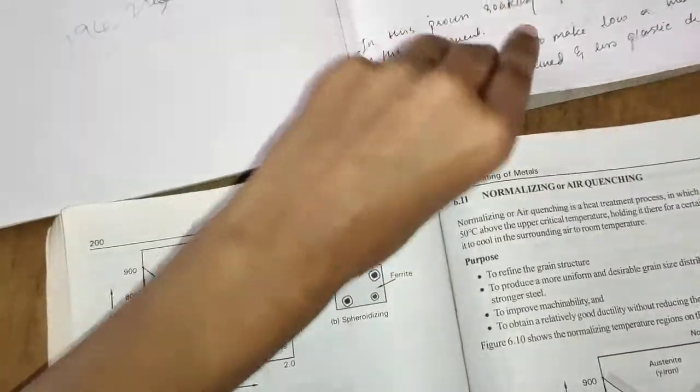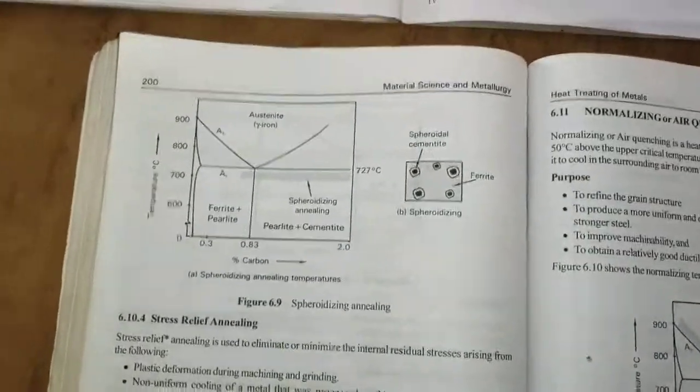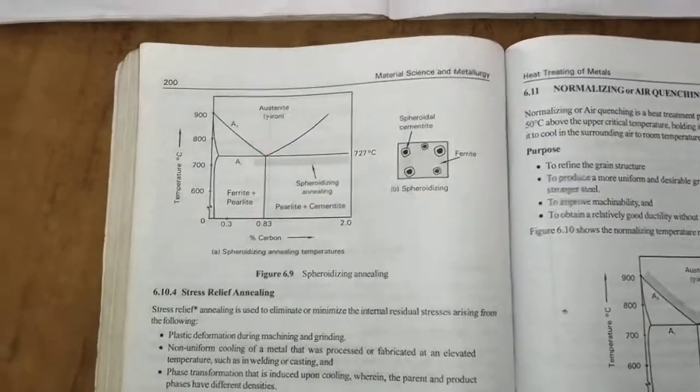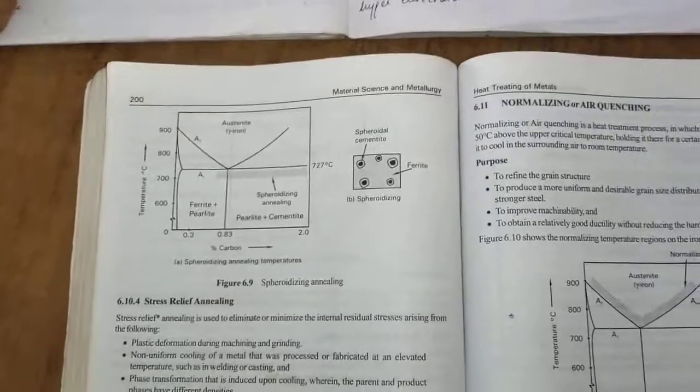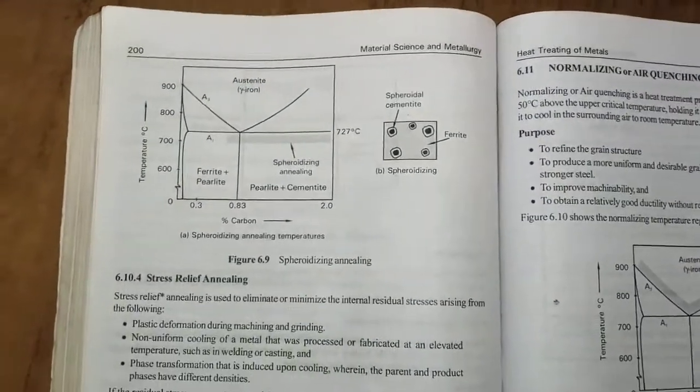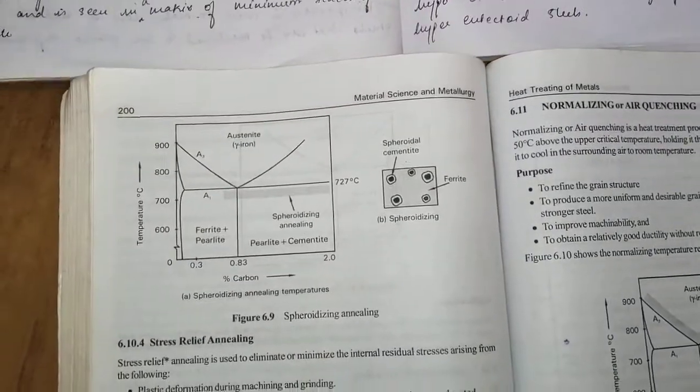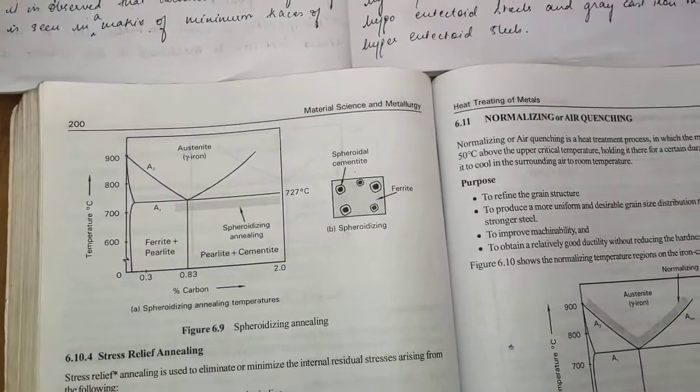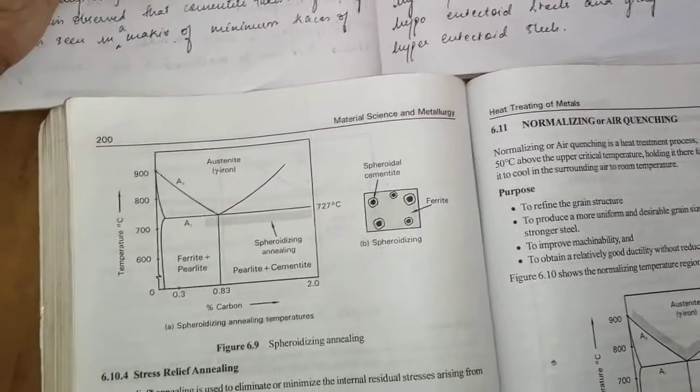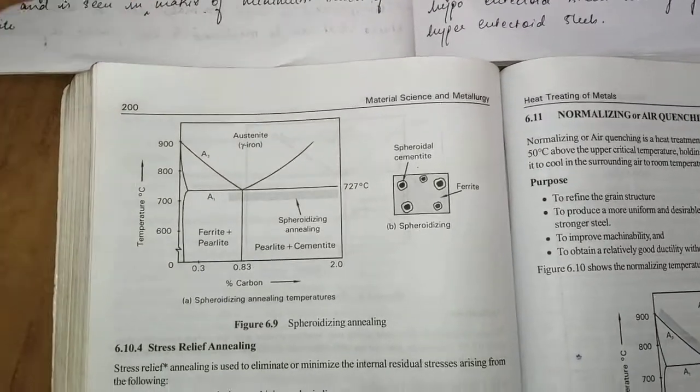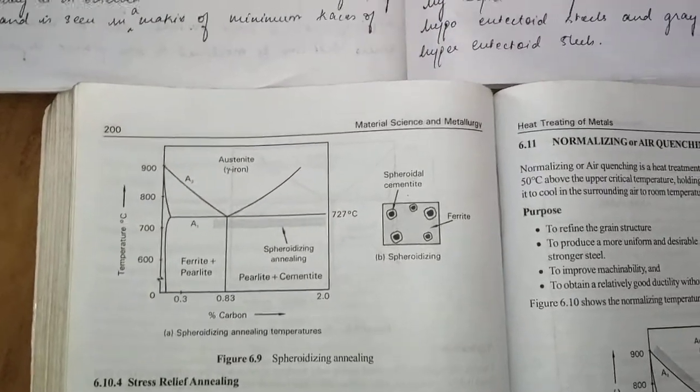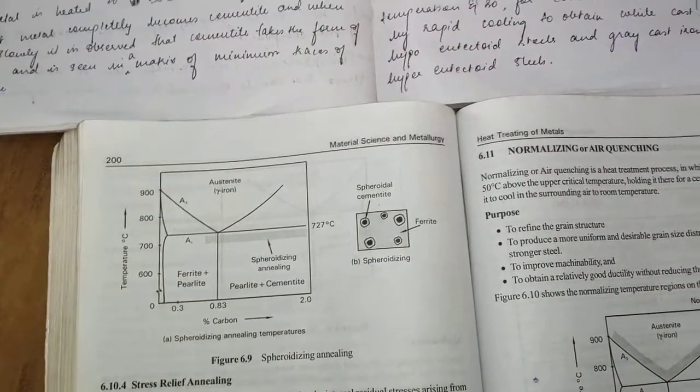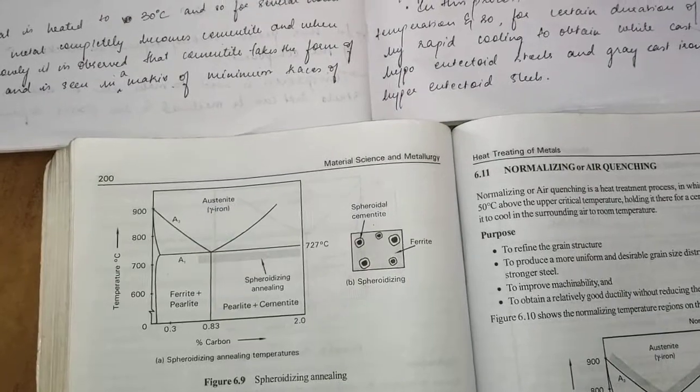Process annealing also cannot be independently done. Previously, if a low carbon steel is subjected to cold working process, only process annealing can be done. They are all basically interrelated. Cold working followed by process annealing followed by spheroidizing mainly improves the ductility of that low carbon steel.